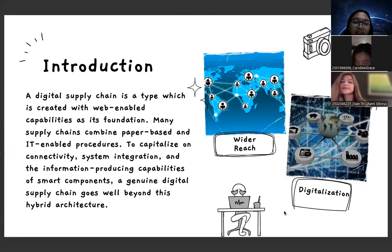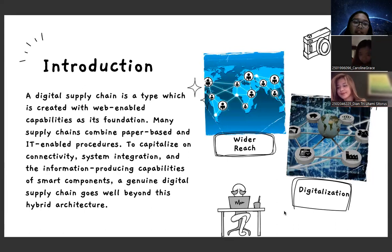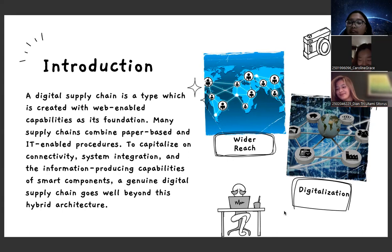Introduction. A digital supply chain is a type which is created with web-enabled capabilities as its foundation. Many supply chains combine paper-based and IT-enabled procedures to capitalize on connectivity, system integration, and the information-producing capabilities of smart components. A genuine digital supply chain goes well beyond these hybrid architectures. This is digitalization. Digitalization can make a wider risk and many more.